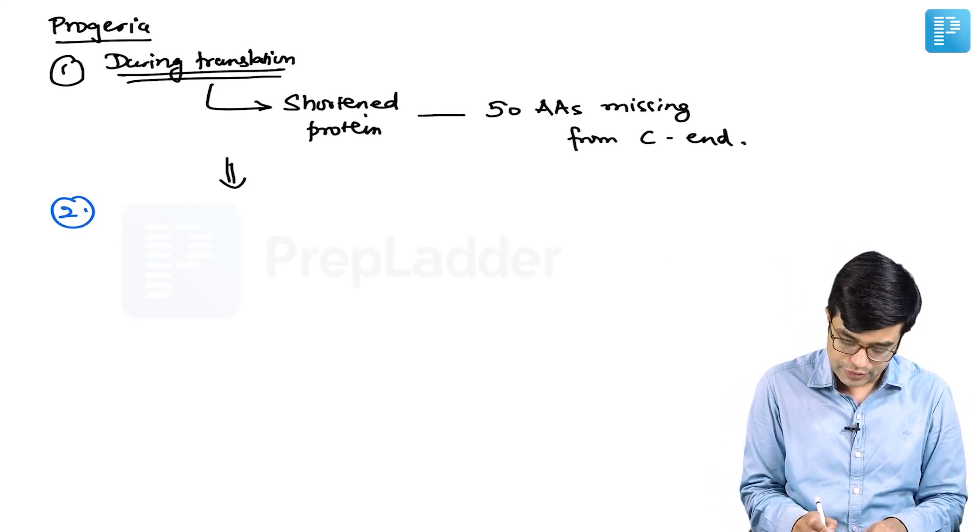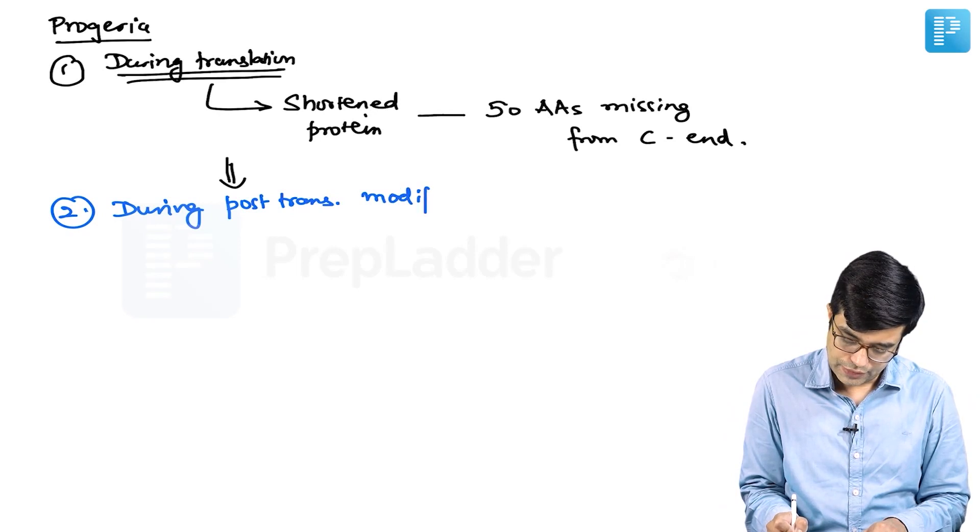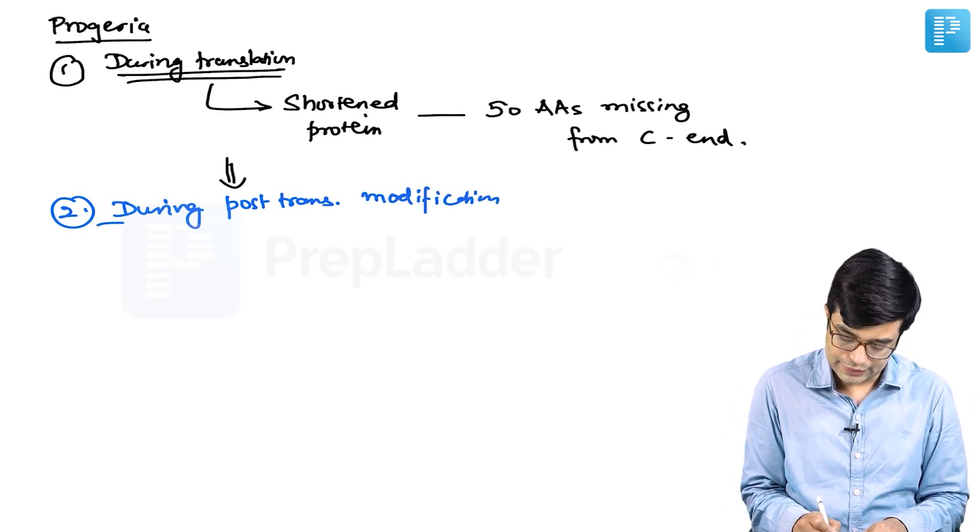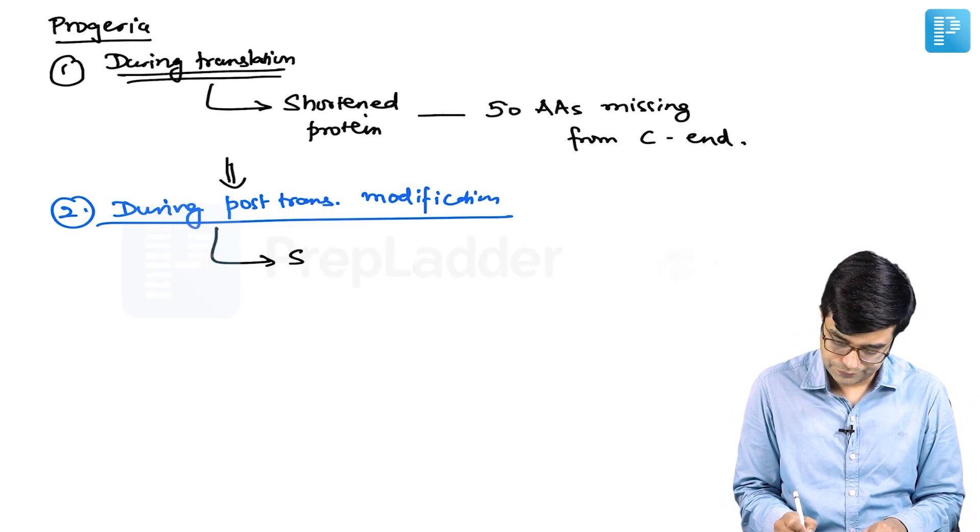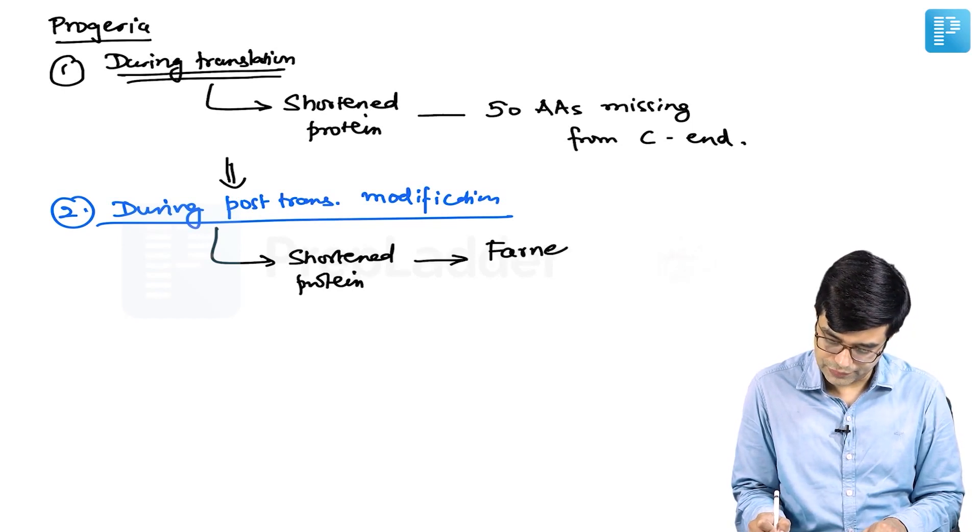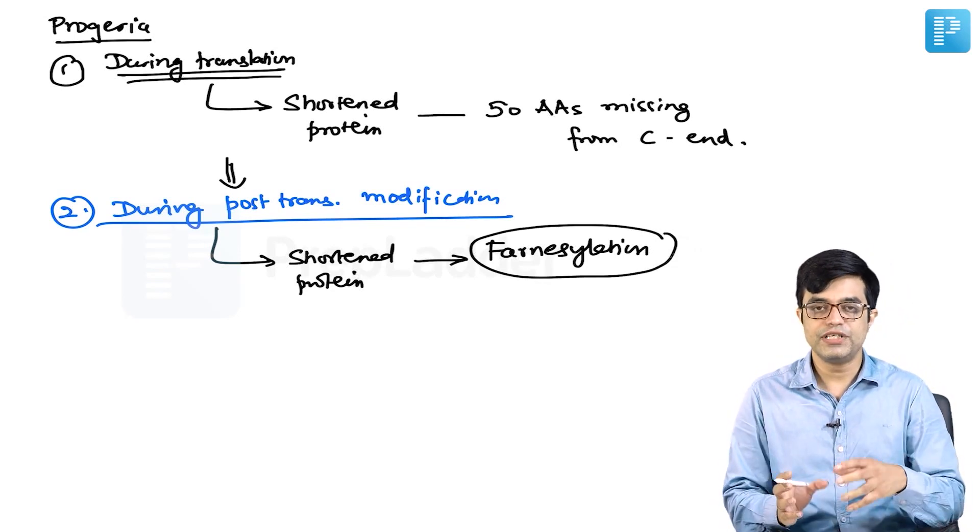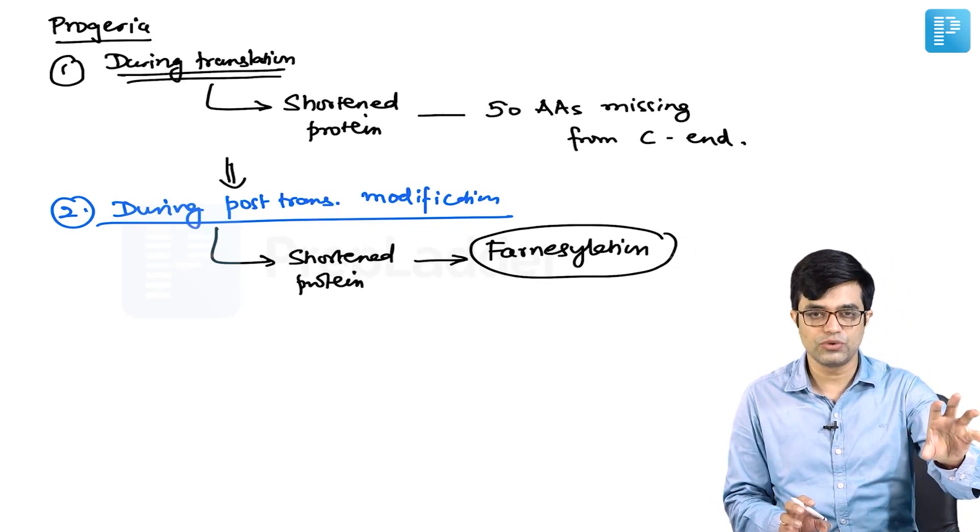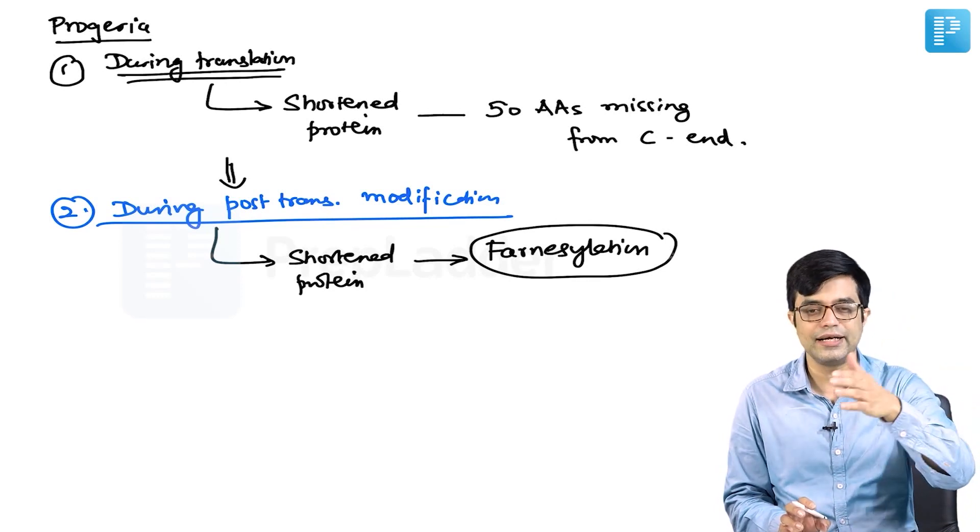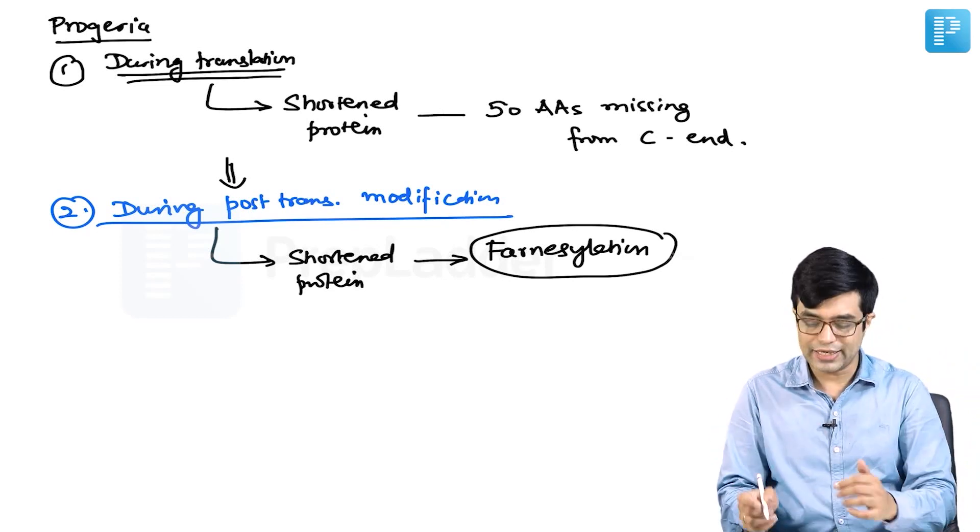Secondly, during post-translational modification, this shortened protein will undergo farnesylation. Farnesylation is a lipophilic group which is transitionally attached to the protein, produces changes, and then is removed. This farnesylation cannot be removed once it gets attached.